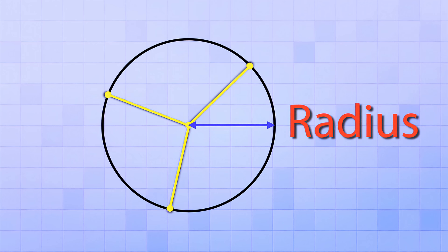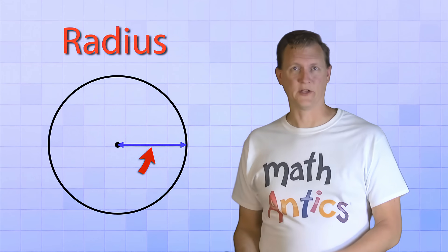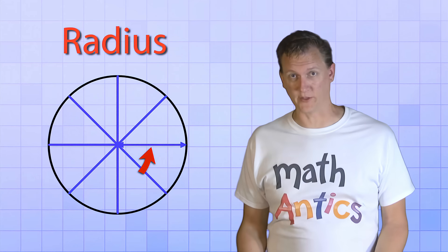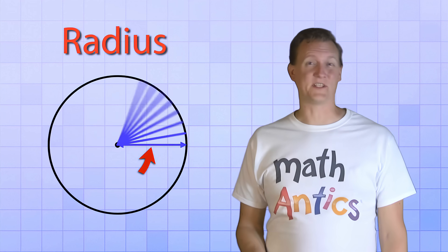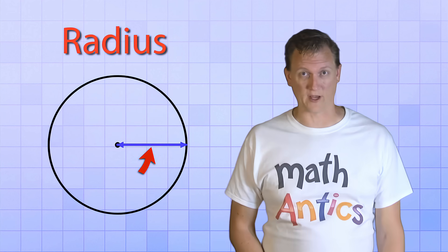Next, we have the distance that we use to draw all of the equidistant points that form a circle. That distance is called the radius. The radius is important because it's the distance from the center of a circle to any other point on the perimeter of that circle. And even though a circle only has one radius dimension, you can draw as many radius lines as you want to. Usually, you'll only see one radius line drawn, since it's the same length no matter where you draw it.